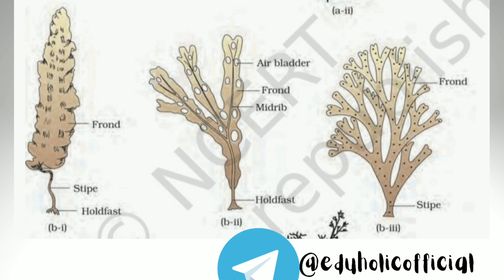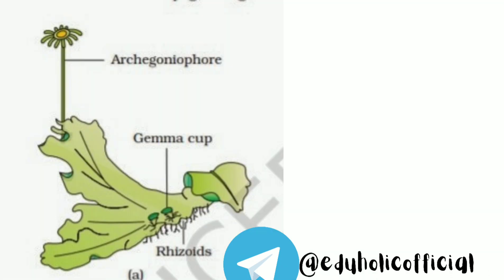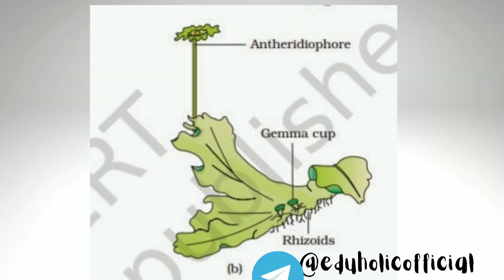The sex organs in bryophytes are multicellular. The male sex organ is called antheridium and produces biflagellate antherozoids. The female sex organ, called archegonium, is flask-shaped and produces a single egg. Antherozoids are released into water where they fuse with the egg to produce the zygote. Zygotes do not undergo reduction division immediately; they produce a multicellular body called a sporophyte. Some cells of the sporophyte undergo meiosis to produce haploid spores that germinate to form gametophytes.